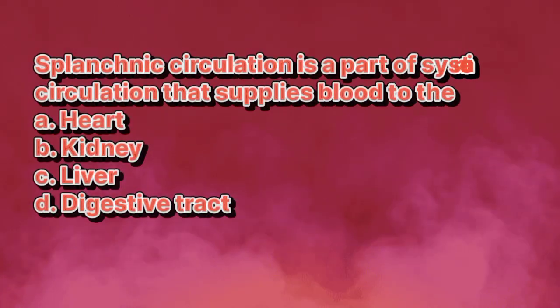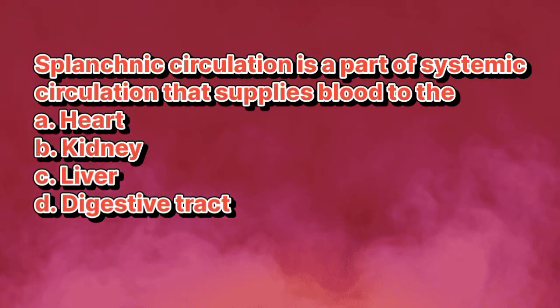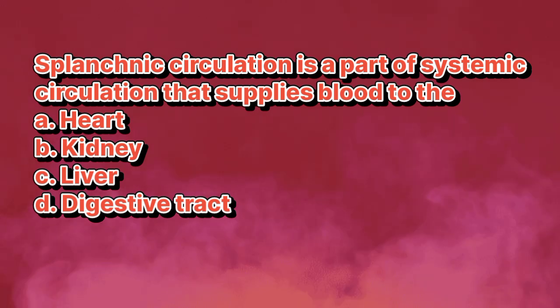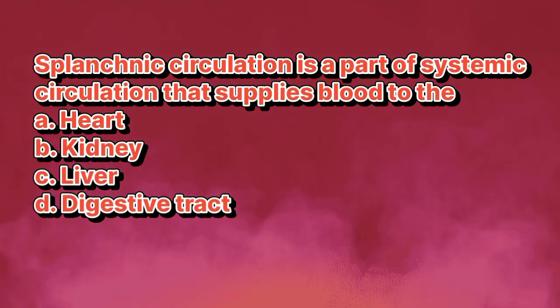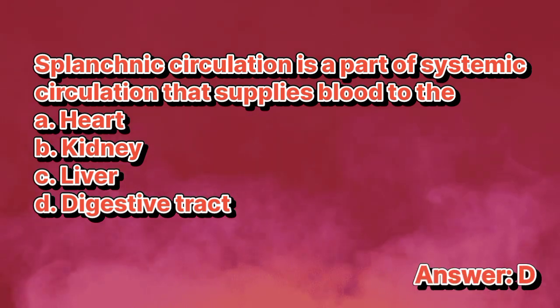Splanchinic circulation is a part of systemic circulation that supplies blood to the: A. Heart. B. Kidney. C. Liver. D. Digestive tract. The answer is letter D.